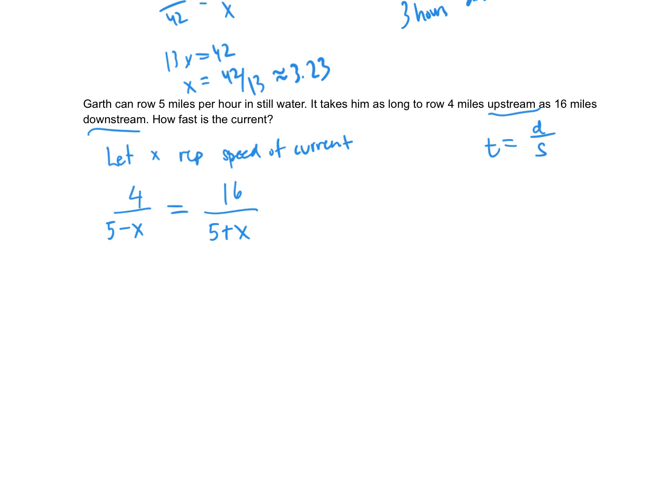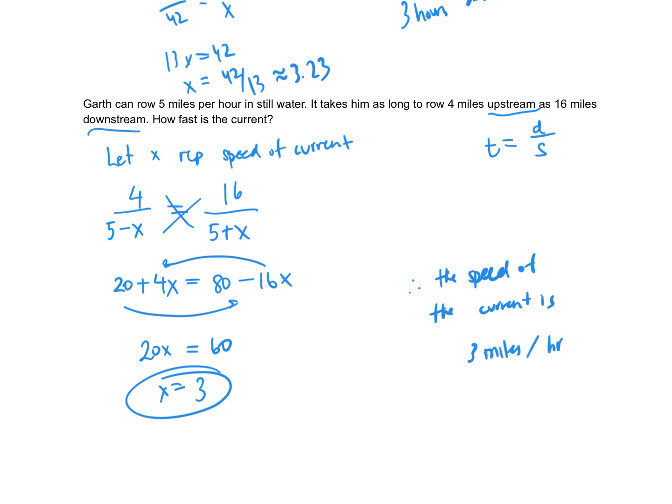Now I'm just going to cross-multiply. So 4 times 5 and 4 times x equals 16 times 5 and 16 times negative x. I'll rearrange, so 20x equals 60, divide both sides by 20, and we get 3. Therefore, the speed of the current is 3 miles per hour. And there we are, three different styles of questions that will produce a rational equation to solve.